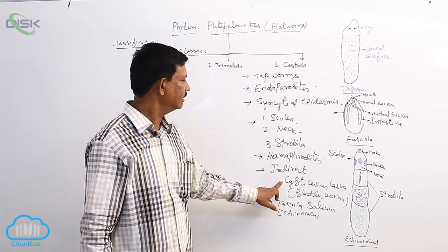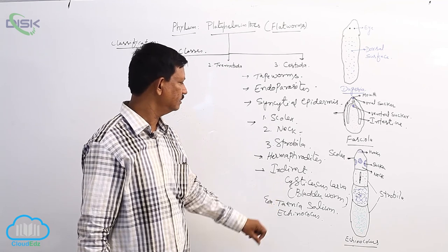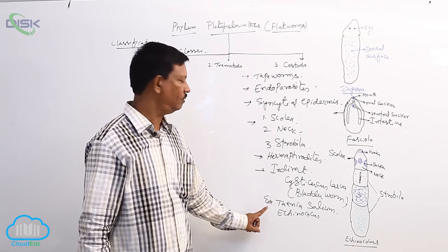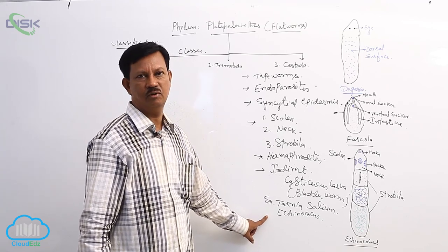Development includes larval forms like the cysticercus larva, also known as bladder worm. Examples are Taenia solium, known as the pig tapeworm, and Echinococcus, the dog tapeworm.